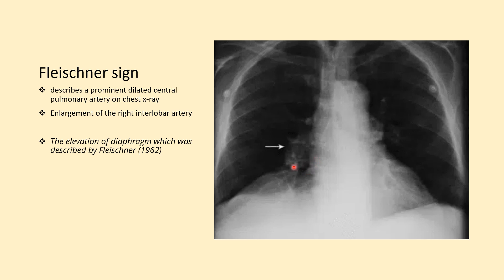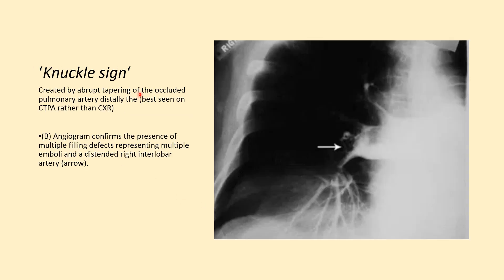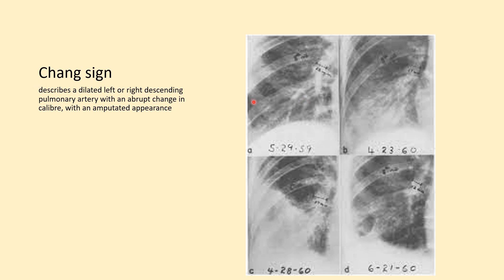This is an X-ray which shows a dilated central pulmonary artery. This is known as the Fleischner sign. Fleischner also described elevation of the hemidiaphragm, which was also a suggestive sign for pulmonary embolism. Another sign is the knuckle sign — when an embolism is lodged in the main pulmonary artery or the right interlobar artery, there is an abrupt tapering of the artery distally. This is known as the knuckle sign. The Shang sign is a combination of the knuckle sign and the Fleischner sign, in which there is a dilated pulmonary artery followed by abrupt tapering distally.